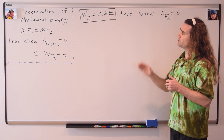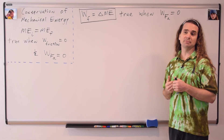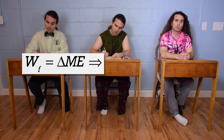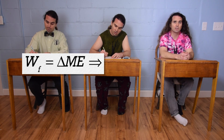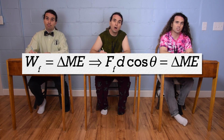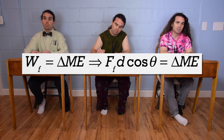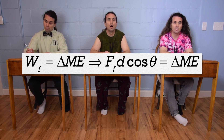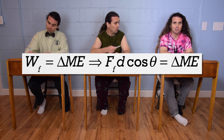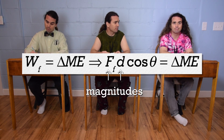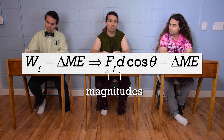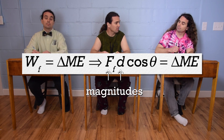Bo, what is the equation for the work done by friction? Well, work is the force doing the work, which in this case is the force of friction, times the displacement of the object, times the cosine of the angle between the force and the displacement. Remember to use the magnitude of the force and the magnitude of the displacement, because it is the cosine of the angle that determines if the work is positive or negative.